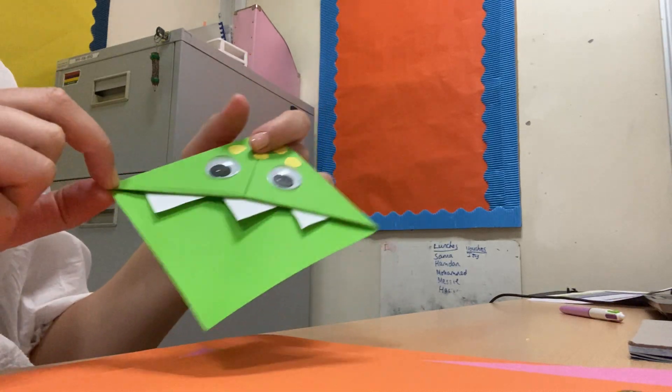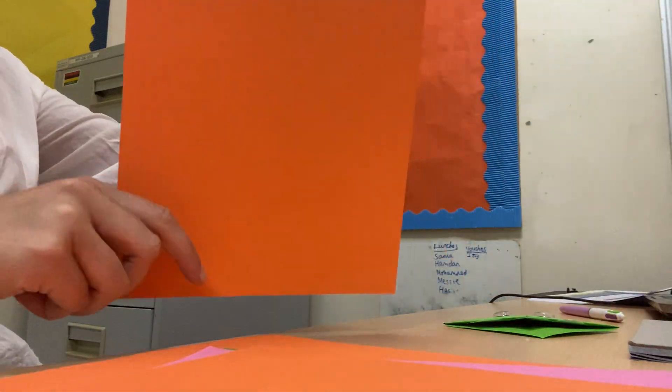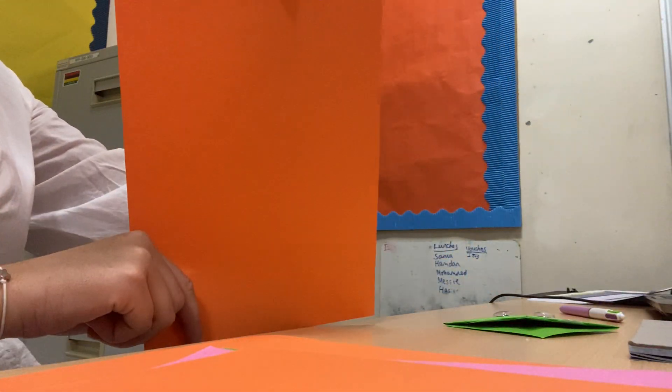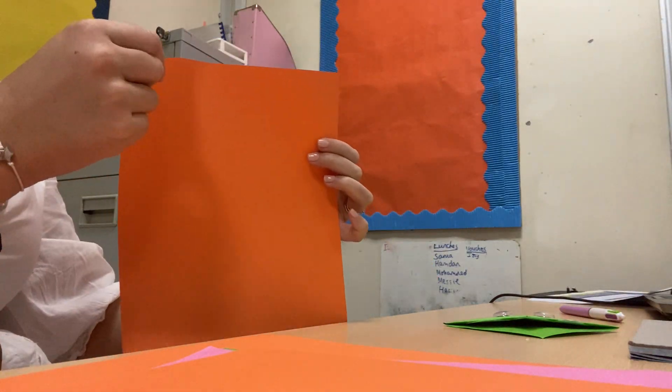So the first thing you need to do is have your A4 paper. You're going to take the top corner, the top corner, fold it to the side until you get a straight line on the side.